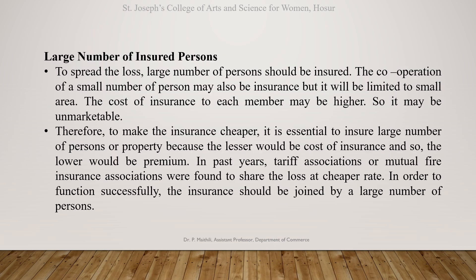Large number of insured persons. To spread the loss, a large number of persons should be insured. The cooperation of a small number of persons may also be insurance, but it will be limited to a small area and the cost of insurance to each member may be higher, making it unmarketable. Therefore, to make insurance cheaper, it is essential to insure a large number of persons or property, because the greater the number, the lesser the cost of insurance and the lower the premium.